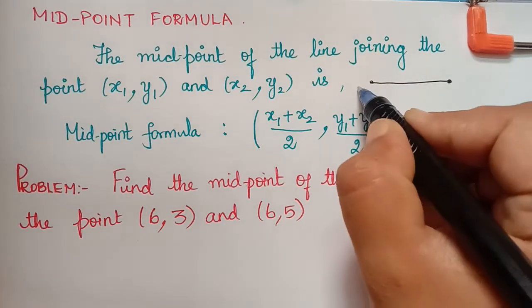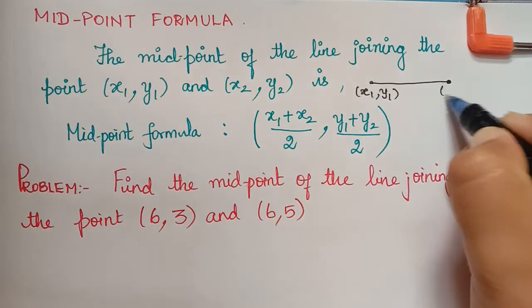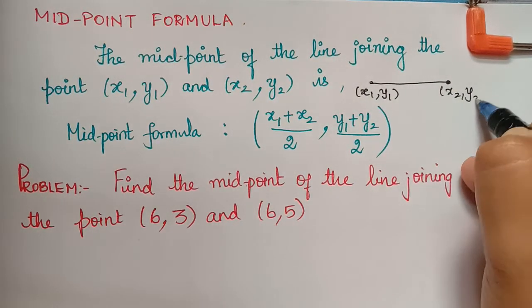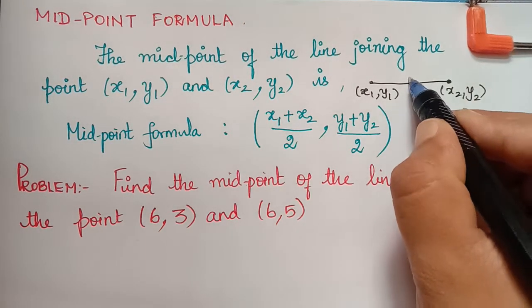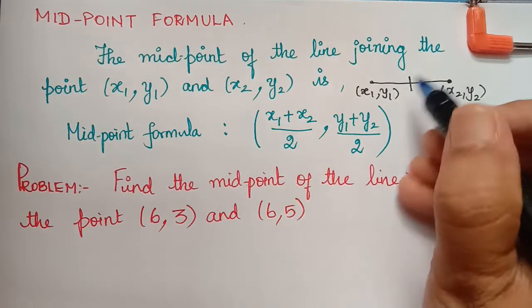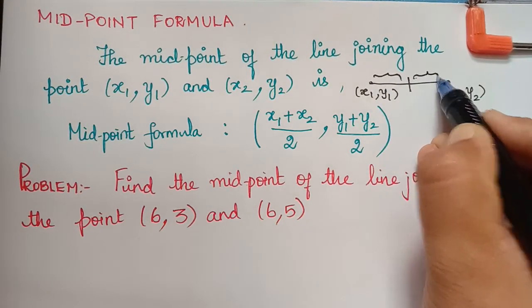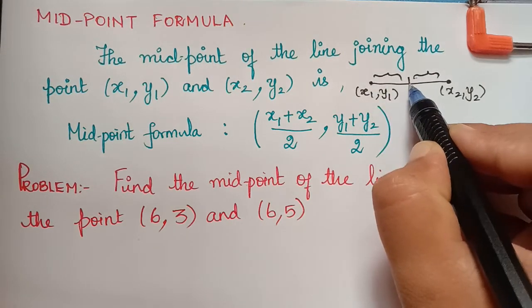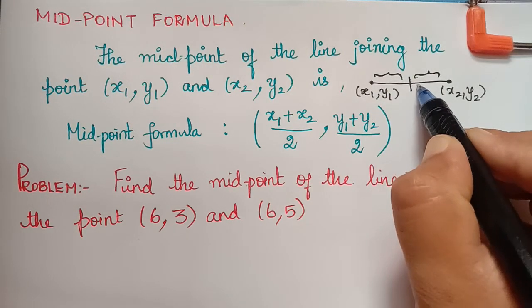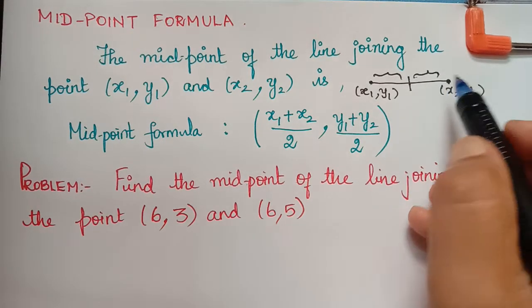If suppose the points are x1 comma y1 and x2 comma y2, then the midpoint is a point that divides this line segment equally in the ratio 1 is to 1. So the distance between this point and the midpoint will be equal to the distance between the midpoint and the end point.